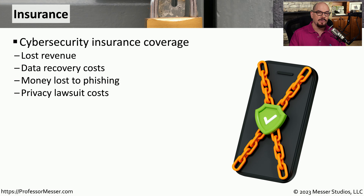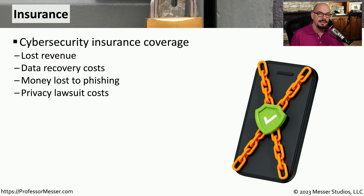Another way to mitigate these vulnerabilities is to move the risk from your environment to a cybersecurity insurance policy. These policies are often executed after an event occurs, so they'll be able to cover any revenue losses or any losses due to the data recovery process. The organization might also lose money due to phishing attempts, or if someone brings a lawsuit based on the results of these attacks.